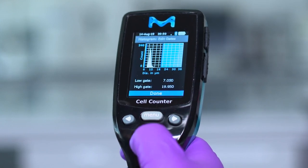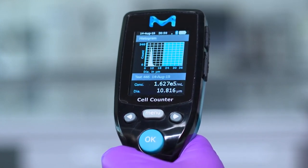Move selector to done and press OK to return to see the newly gated histogram. The new generated concentration and diameter values are shown.